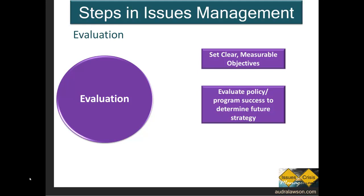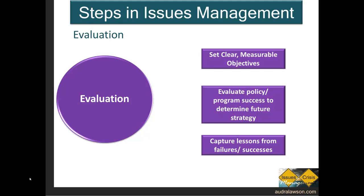And most importantly, how you're going to access that information. Finally, capturing lessons from failures and successes. In truth, this is probably the most important part in an ongoing issues management program, because it informs the other three stages. From what went well: what aspects of the process should be replicated in the future? For what went poorly: what were the problems and how can they be mitigated in the future? Naturally, lessons learned aren't just about issues management. There will be real, tangible management, leadership, and material lessons learned from each issue managed, no matter whether it was poorly managed or effectively managed.